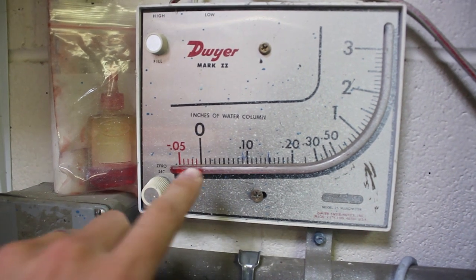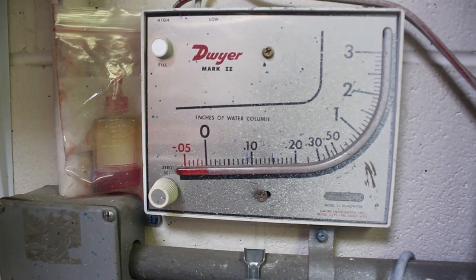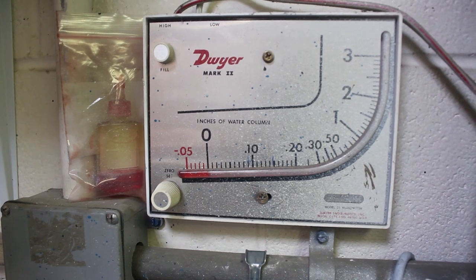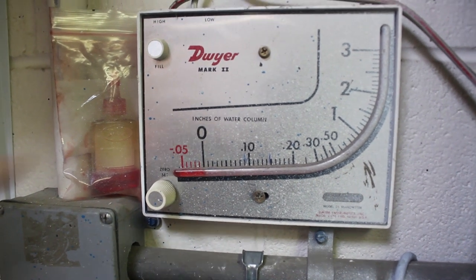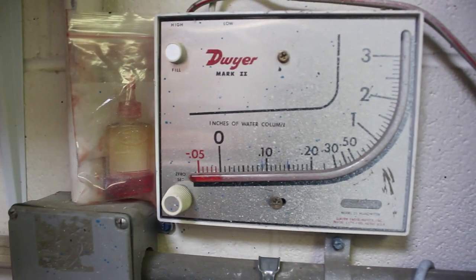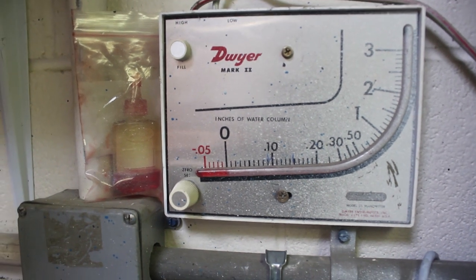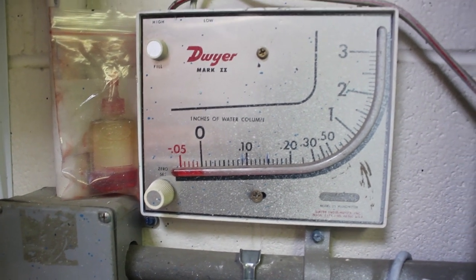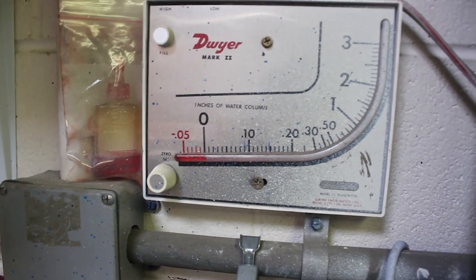You also want to make sure to set this zero point at the beginning of most days or at least a couple times a week as it can slowly change over time as gauge oil may evaporate or similar factors contribute to a change in the reading.